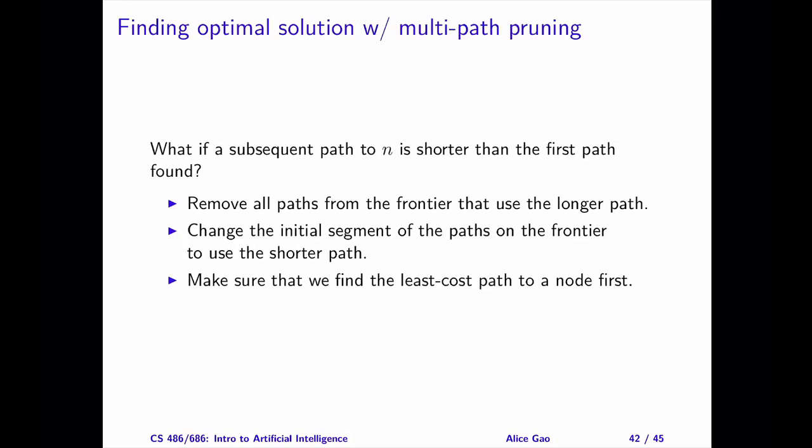We just learned some bad news — multipath pruning can cause A-star to discard the optimal solution. How can we fix it? There are several strategies. The first strategy: we can find and discard all the longer paths to the node on the frontier. However, discarding all the longer paths seems wasteful, since some of the longer paths may be quite close to a goal node. A better choice would be to replace the longer path with the shorter ones that we just found — this is strategy number two. Both strategies are quite computationally intensive. If the frontier is large, searching for a path on the frontier may take a long time. Can we avoid this work altogether?